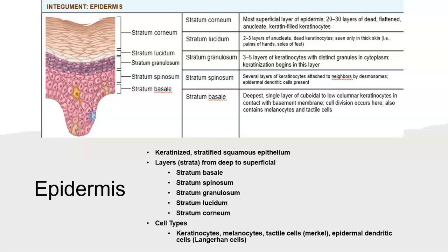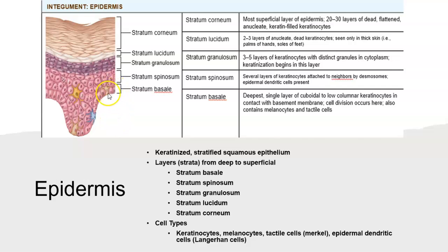Let's look at these layers in a bit more detail and we'll begin with the most superficial layer, the epidermis. As I previously mentioned, the epidermis is made of many different layers or strata — stratum is singular, strata is plural — so we have five strata. Let's begin by looking at what they're made of: keratinized stratified squamous epithelial cells.